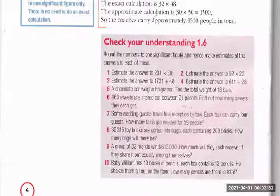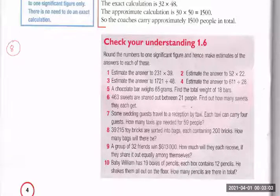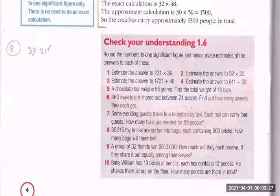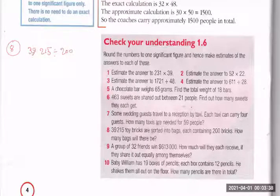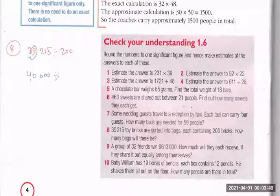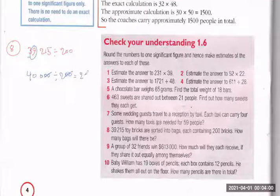Question number eight: 39,215 toy bricks are sorted into bags, each containing 200 bricks. How many bags will there be? We divide 39,215 by 200. Rounding 39,215 to one significant figure gives 40,000. So 40,000 divide by 200 — cancel 100 with 100 — gives 400 divide by 2, which equals 200 bags.